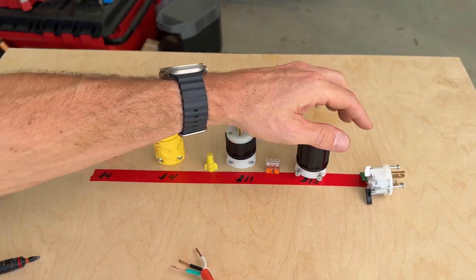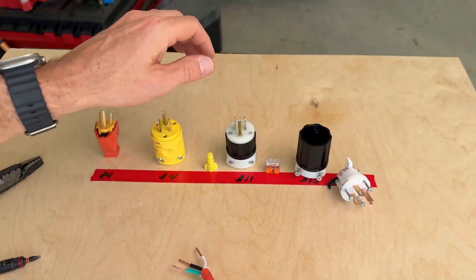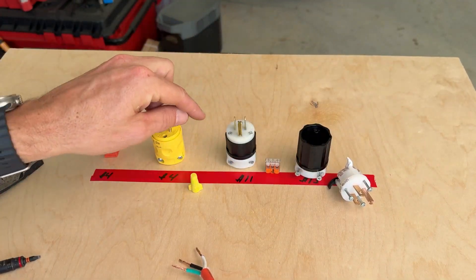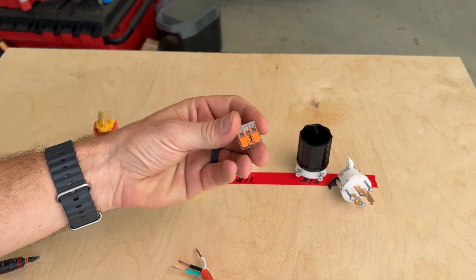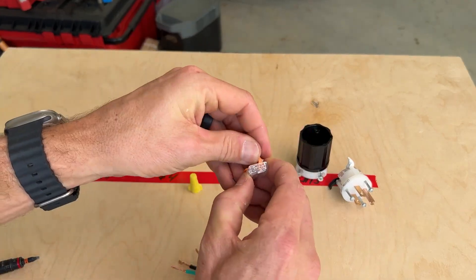Now what about our last option here from Leviton? If these guys are wire nut equivalents, this version here would be similar to the Wago 221 lever nut. Extremely easy to wire up with these levers.